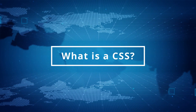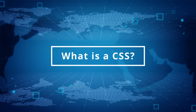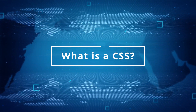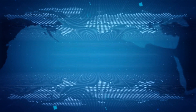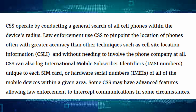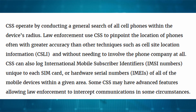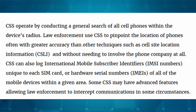For those that don't know, a cell site simulator or CSS are devices that can gather detailed information about your cellular phone without your knowledge or consent. The EFF states that CSS operate by conducting a general search of all cell phones within the device's radius. Law enforcement use CSS to pinpoint the location of phones, often with greater accuracy than other techniques such as cell site location information (CSLI), and without needing to involve the phone company at all.